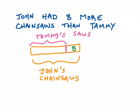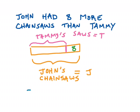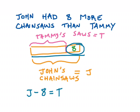From here I can think about what do I know and what do I not know. Any information on my diagram that I know is a constant; anything I don't know I'm probably going to make into a variable. John's chainsaws doesn't have a number we know, so I'm going to say that's equal to J for John's chainsaws. And on the other side we've got Tammy's saws — I'm going to call that T. Now, looking at this diagram, John's bar is the biggest, and if I wanted to make it equal Tammy's bar I'd have to take the eight away. So: J minus eight equals T.